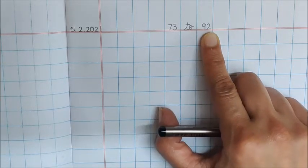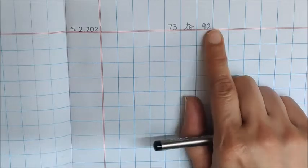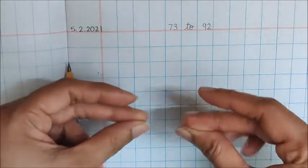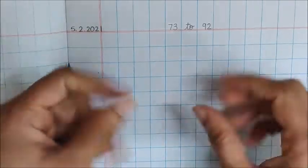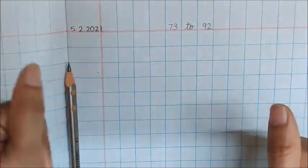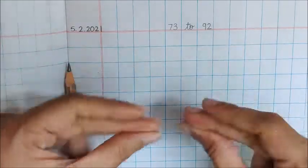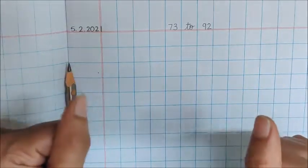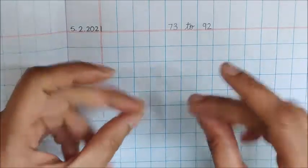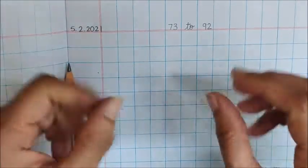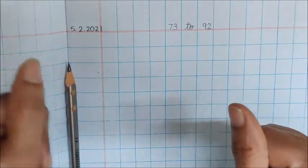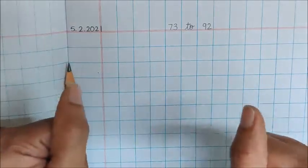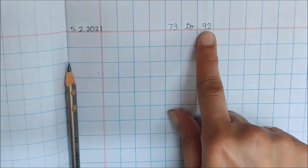Children, let us do oral counting first from 73 to 92. Snap your fingers. 73, 74, 75, 76, 77, 78, 79, 80, 81, 82, 83, 84, 85, 86, 87, 88, 89, 90, 91, 92, stop. Stop at number 92.